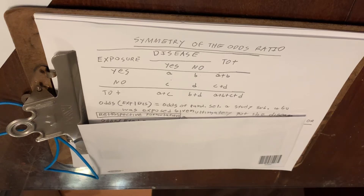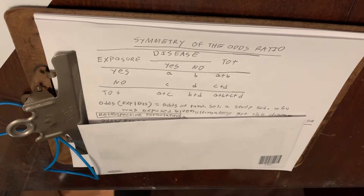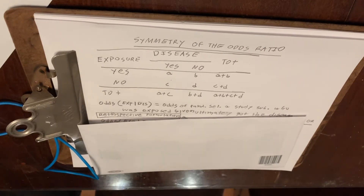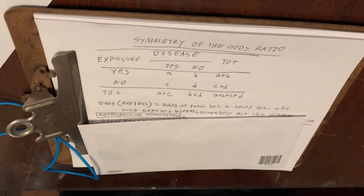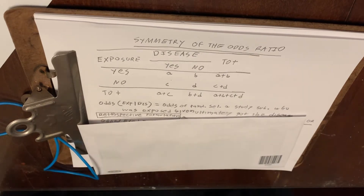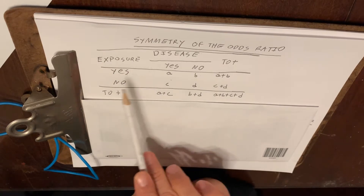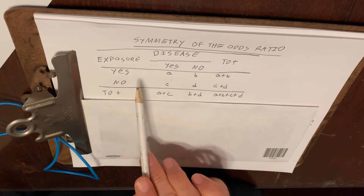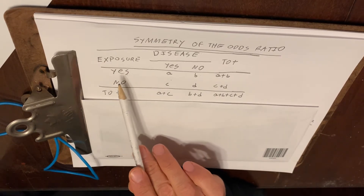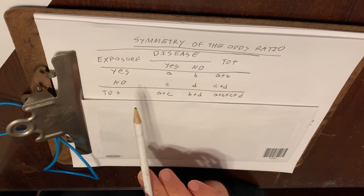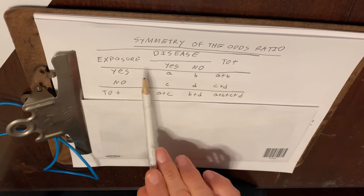Today's topic is symmetry of the odds ratio. Let's take a look at the data we've looked at before, where we have exposure and a disease. We're going to look at it slightly differently — as if we're able to do a prospective study, which means we're able to look forward in time like we normally would as we are living our lives.